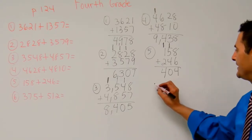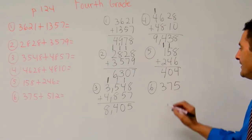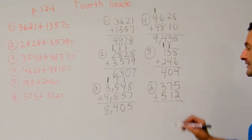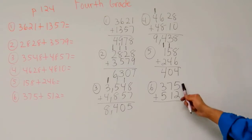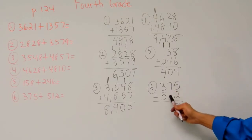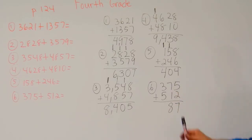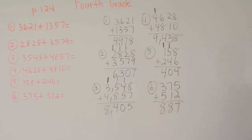Finally, let's look at number 6. Number 6 is 375 plus 512. Let's go ahead and add that up. 1's place: 5 plus 2, that's 7 1's. 10's place: 7 plus 1 is 8 10's. And finally, 100's place: 5 plus 3, that's 8 100's. The answer is 887.